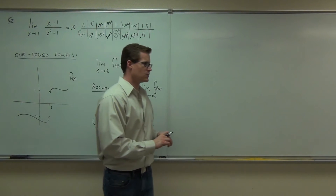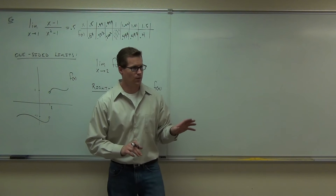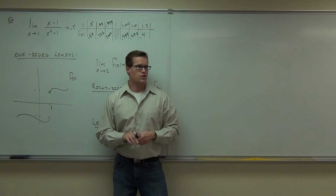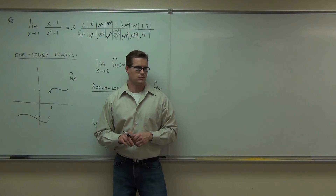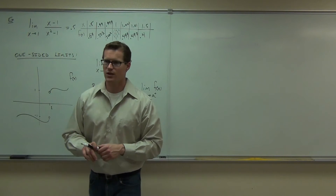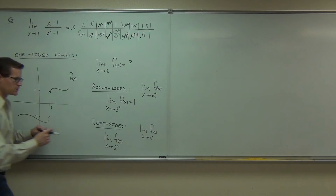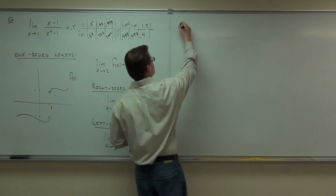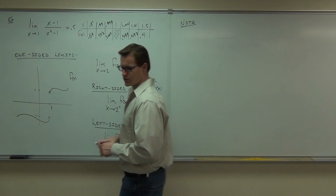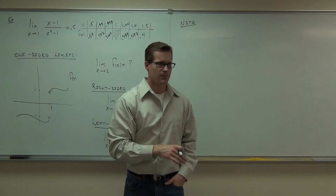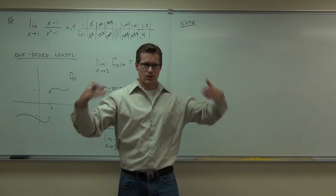Is everyone okay with the height being one as this function approaches an x value of two? Now we're going to do it from the left-hand side. What's the height of my finger — the y value — as I approach the x value of two from the left? Where am I getting close to? Negative one. In order for a limit to exist at a point, the left-side limit must equal the right-side limit. If it doesn't, then the limit doesn't exist — it's got to go to the same place.